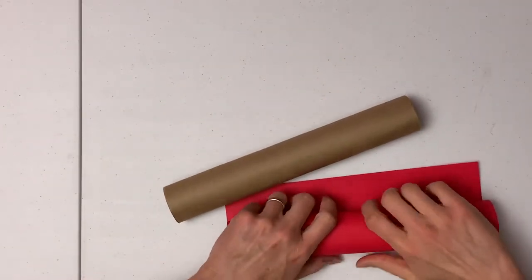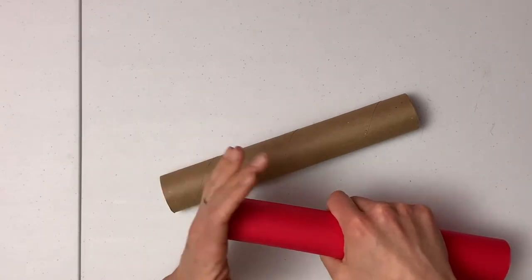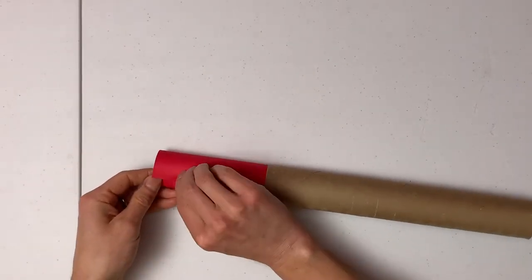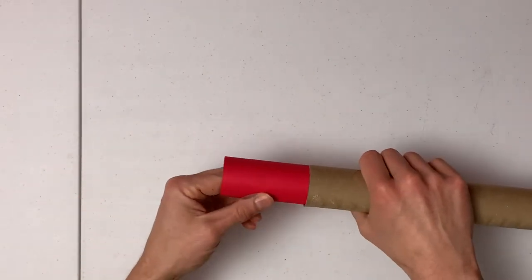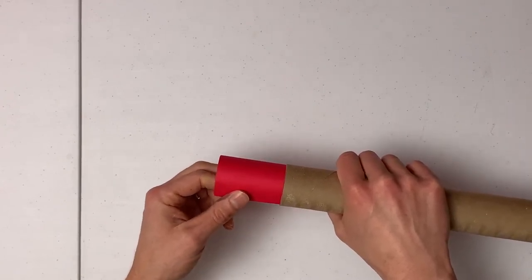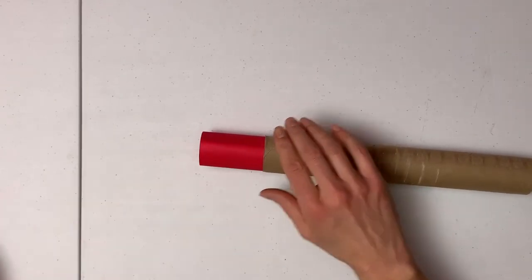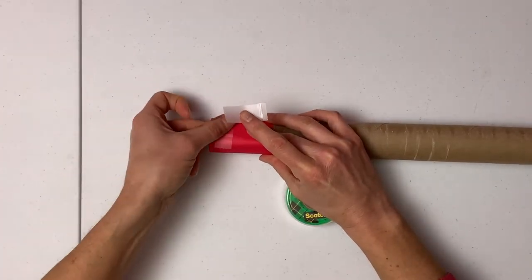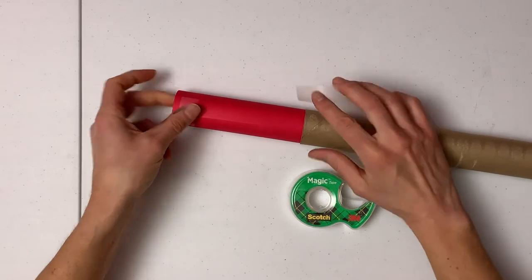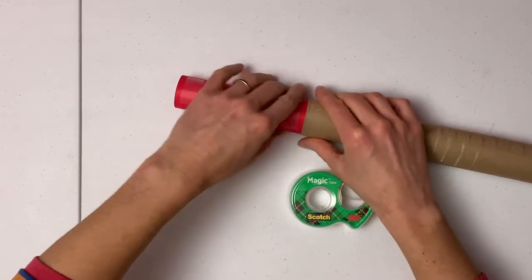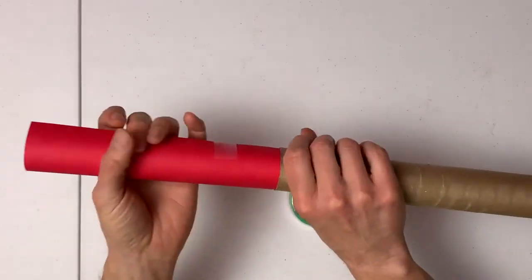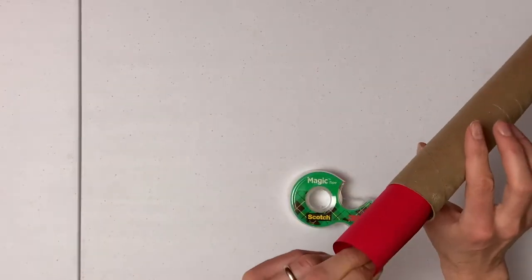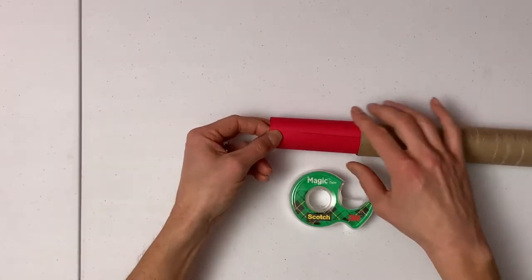Let's get started. I've got my paper towel roll. The first thing I'm going to do is take my inside piece of cardstock, roll it up longways, put it in here. We need to tape this so we have a nice fit. We want it to fit in here, we don't want it to be really loose but we don't want it to be too tight.